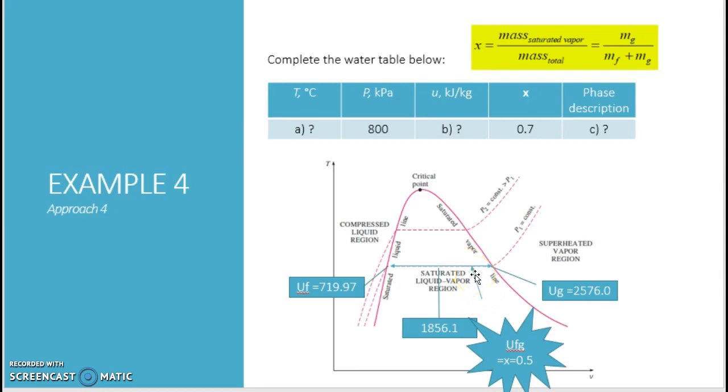But what will be your U value? As you can see at this point, this is the U value. At half, X is equal to half, this is the U value. At fully saturated gas, this is the U value. So at 0.7, what will be their value? So we are going to make use of this equation.